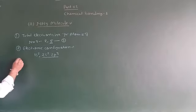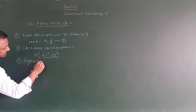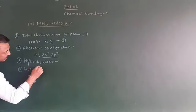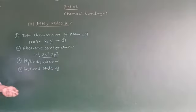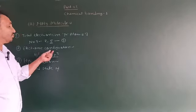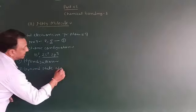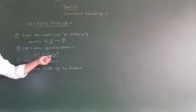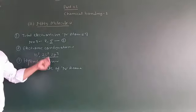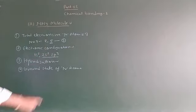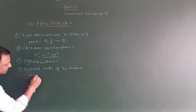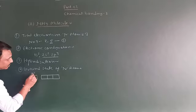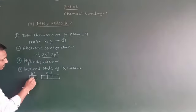Third point: hybridization के 3 parts हैं। Part A: ground state। जब lowest energy होती है तो उसको ground state कहते हैं। Ground state of N atom: 2s2, 2p3। S में 1 orbital, maximum 2 electrons; P में 3 orbitals, maximum 6 electrons। यहाँ 2p में 3 electrons हैं: 1, 2, 3 — तीनों अलग-अलग orbitals में।